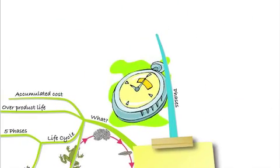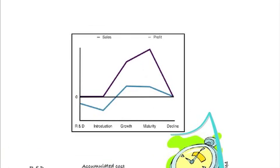The five phases — research and development, introduction, growth, maturity, and decline — are all set out along the bottom of our graph. Halfway up the graph we have the zero point. The purple line at the top shows sales; the bottom blue line shows profit. At the start, in the research and development phase, we have zero sales because the product hasn't come to market yet. Our profit is going down — we're making a loss — because we're spending money on research and development but haven't had any sales. Costs with no revenue means we're losing money, so our profit is negative.